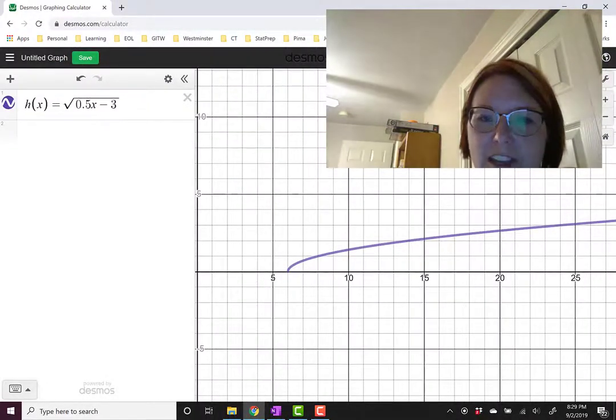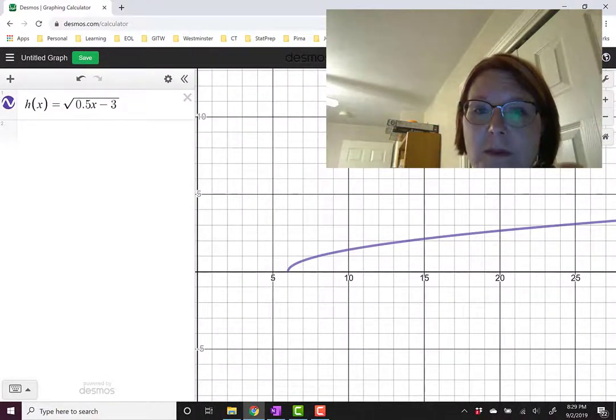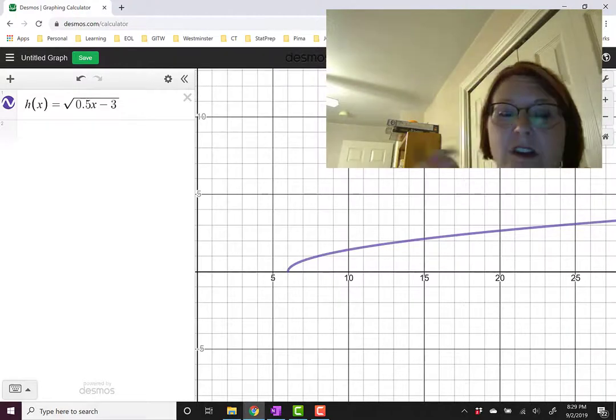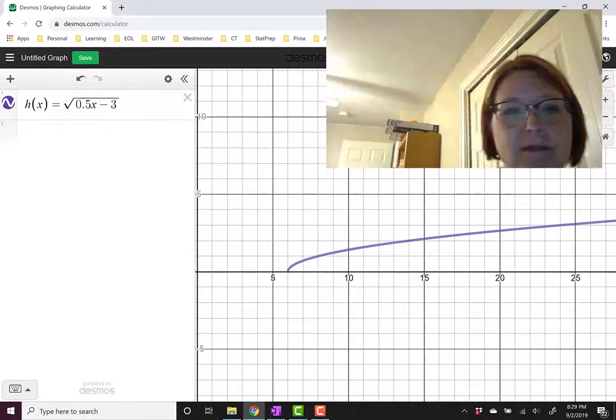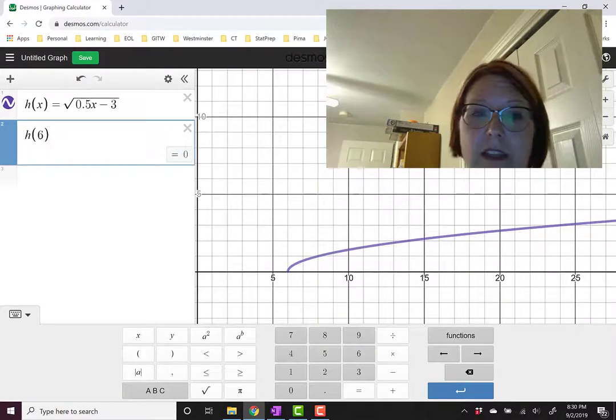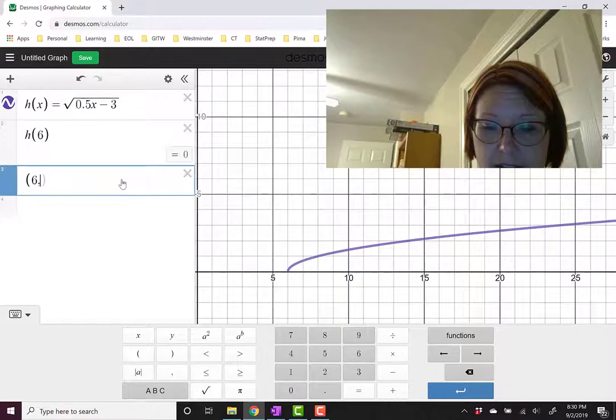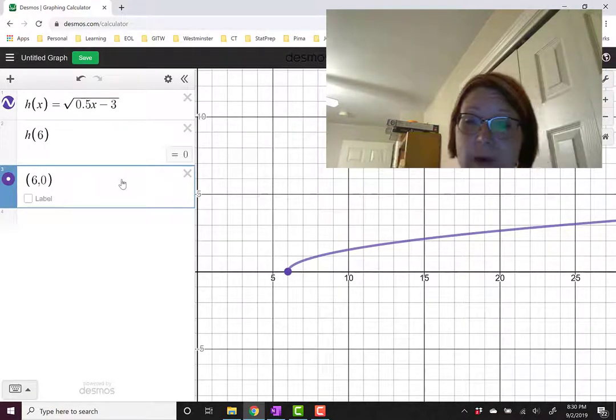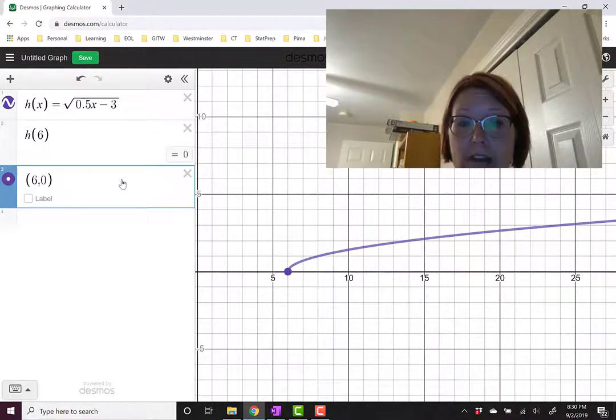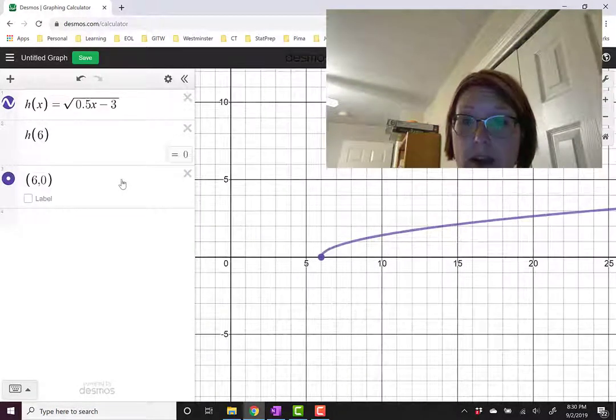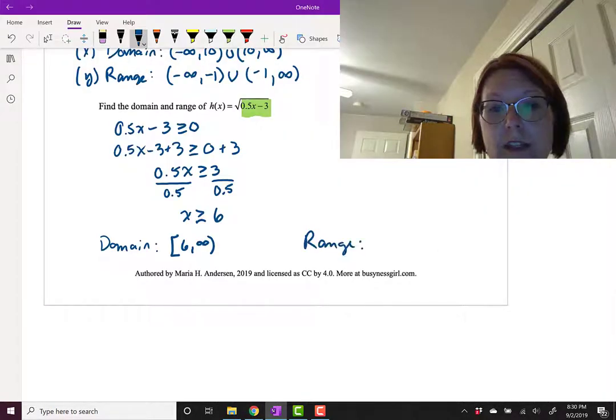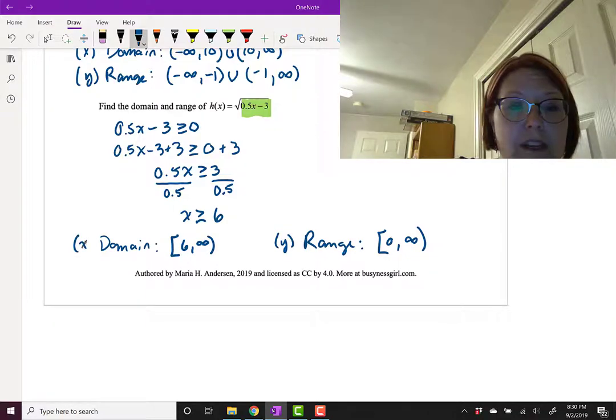Now the place where we have the lowest x value on this graph should also be the place where we have the lowest y value. So all we really need to do to find that lowest y value is evaluate h(6) and you'll see that h(6) = 0. So we actually have a point here at (6, 0) and that is the endpoint in the y direction as well. So our y values will span everything from y = 0 going on forever moving up. So our range is [0, ∞). Remember that's the y values where the domain was the x values.